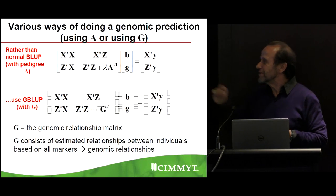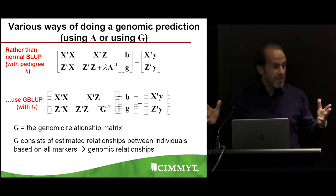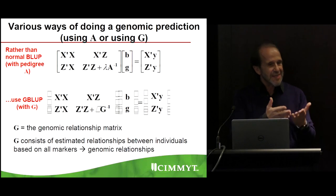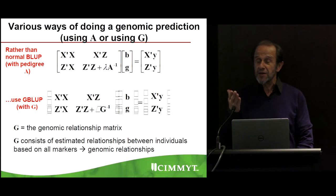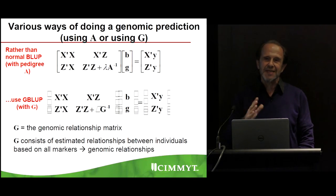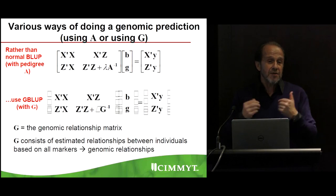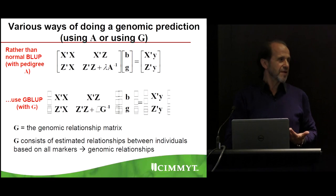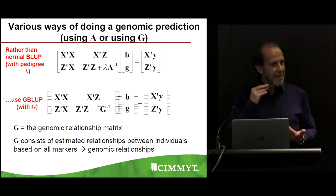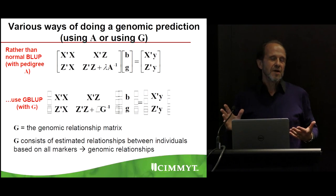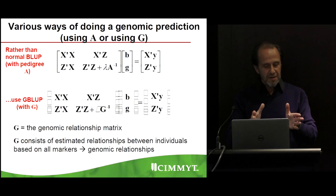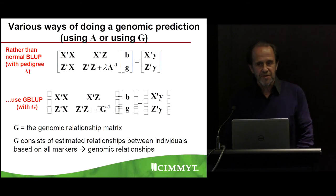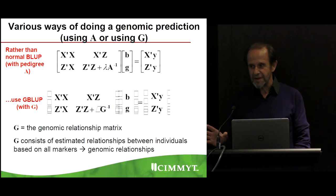In genomics, when you have so many markers, some of their effects need to go to zero because otherwise you cannot estimate them. Some marker effects are zero, and that's what we will see after lunch. Don't worry about the number of markers during lunch.